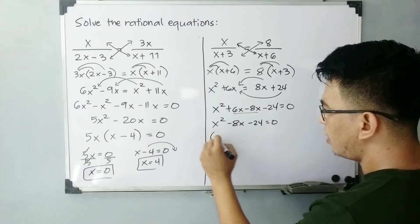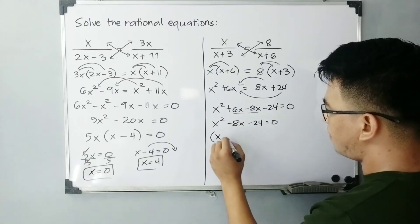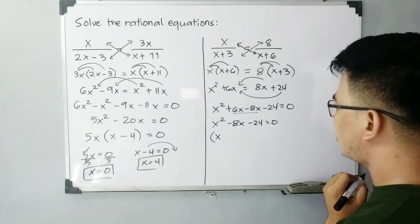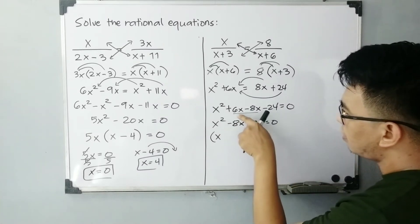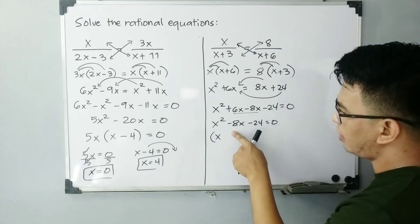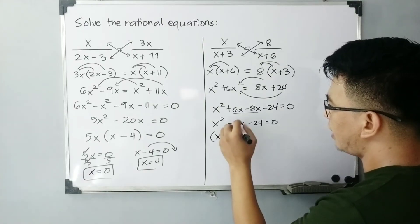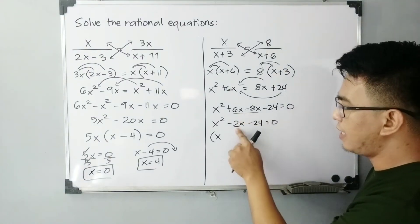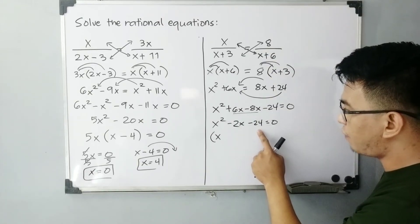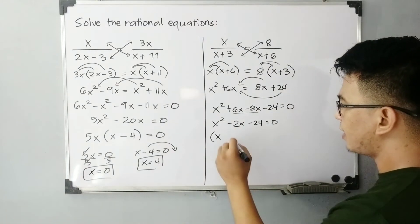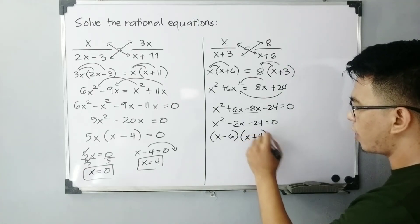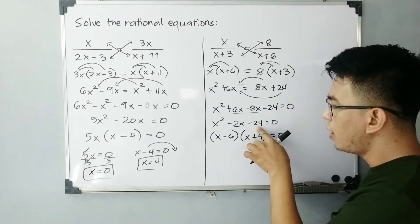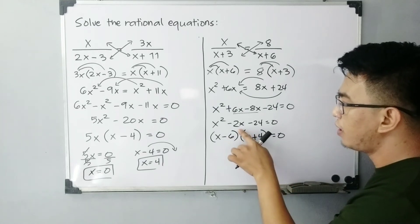So the factors are, what are the factors of negative 24 that can give you the sum of negative 2? That is negative 6 and then x plus 4 is equal to 0. Negative 6 times 4 is negative 24 and then negative 6 plus 4, that is negative 2.